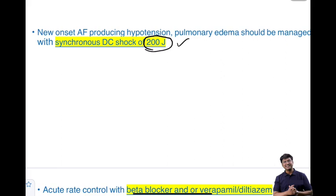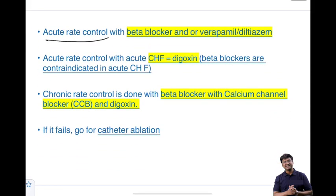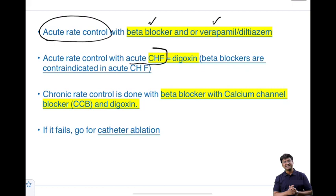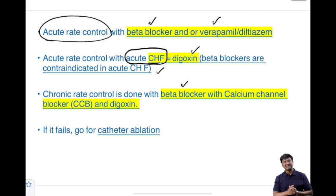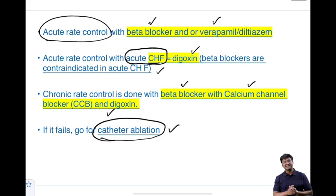Some quick pointers on the treatment of atrial fibrillation: for acute rate control, use a beta blocker or verapamil. For acute rate control with acute congestive heart failure, beta blockers are contraindicated — give digoxin instead. For chronic rate control, either a beta blocker, calcium channel blocker, or digoxin can be used. If all of the above fail, catheter ablation should be done.